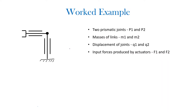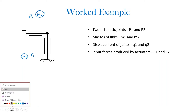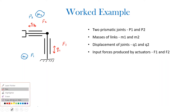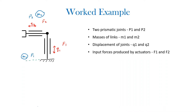To make things clearer, let's go through a worked example. The robot in question has two prismatic joints, p1 and p2. The link attached to joint p1 has a mass of m1, and the link attached to p2 has a mass m2. Joint p1 can move linearly upwards and downwards with displacement q1, while p2 can move from side to side with displacement q2. There is also an input force acting on each joint: f1 for the first and f2 for the second. The first step is to find the position vectors, for which it's helpful to set up a coordinate system.